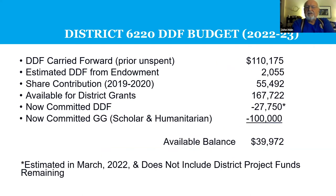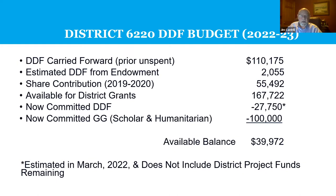For District 6220, coming into this fiscal year, we had north of $110K in carry-forward DDF, a couple thousand in endowment, a share contribution of $55,000, and $167,722 available for district grants. Thus far we've committed $27,750 of DDF, and we've now committed $100,000 to global grants — both scholar and humanitarian. Our available balance right now is just a little bit below $40K that we could still spend in this fiscal year in the next few months.